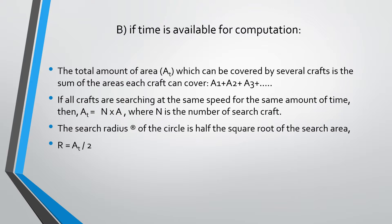If all crafts are searching at the same speed for the same amount of time, then the total area AT becomes equal to N times A, where N is the number of search craft and A is the search area.